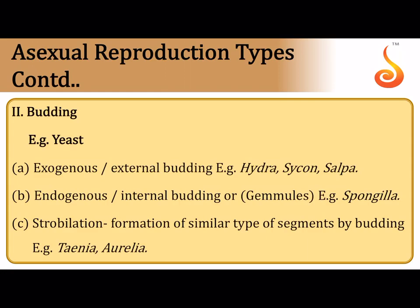Budding on the external side, as in hydra, cyclone, and salpa, is called exogenous budding. Yeast also belongs to the exogenous type. If budding happens inside the body it is called internal budding. Budding during developmental stages is seen in aurelia, and in adult tapeworm, segmentation or strobilation happens — which is somewhat similar to budding in asexual reproduction.